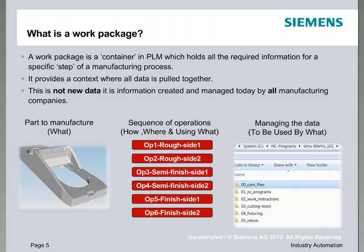A native customer, someone using just NX, would probably have a file system or folder structure, like the one indicated on the right, where they actually manage all of their data. For example, the CAM files — the actual NX part files — may go into a specific machine folder. The actual NC programs, the post-processed code, would go into an NC programs folder. These would all potentially be pushed into a DNC solution, for example.